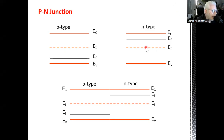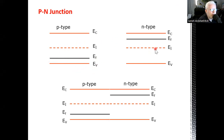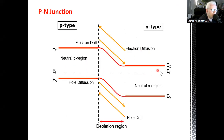An energy band diagram under thermodynamic equilibrium is defined as a diagram with a purely horizontal Fermi level. To combine these two junctions, you have to plot a constant horizontal Fermi level, and then plot EC and EV for each junction with respect to this reference Fermi level, which results in this structure — a constant horizontal Fermi level.